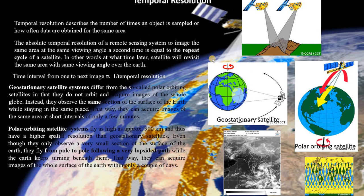So if the temporal resolution of a satellite is one day, then obviously tomorrow morning at 10 a.m. you will get the next data for the same region. This indicates the time interval between one satellite data acquisition and the next for the same region — at what time later the satellite will revisit the same area with the same viewing angle.